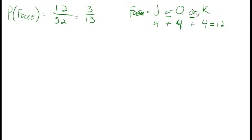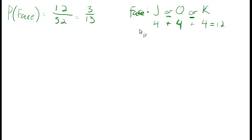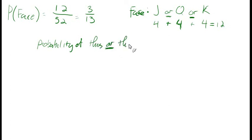Because any of those that we get — jack, queen, or king — we are successful. There are 12 total, so 12 out of 52. What we're trying to establish in this section is: if we want to know the probability of anything in the form of 'probability of this or that,' then we can just add the probabilities together. That's just the probability of this, plus the probability of that.